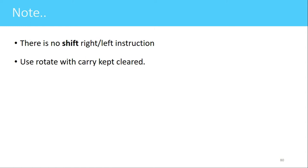The difference between rotate and shift is: in rotate right, the data is rotated right by one bit position — the LSB of the file register is copied to the carry flag, and the bit in the carry flag is copied to the MSB of the file register. In rotate left, the MSB of the file register is copied to the carry flag, and the carry flag is copied to the LSB position of the file register.